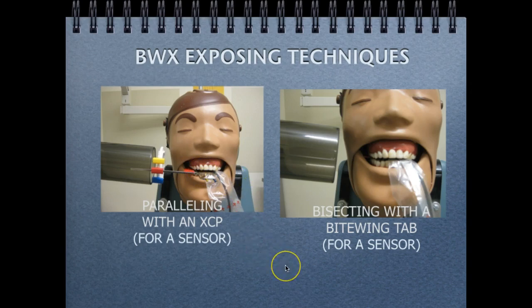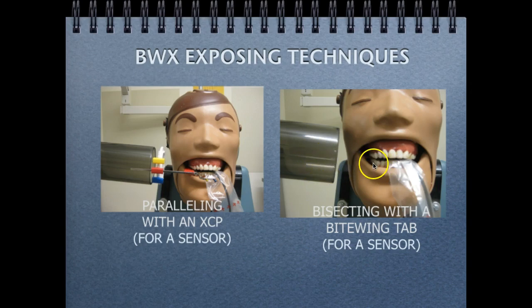For the bisecting technique, there is no extra-oral indication of where to align the PID with the teeth and the image receptor. We have to rely on our knowledge of facial landmarks in order to align the PID and the image receptor to the teeth to obtain a diagnostic quality bite wing image.